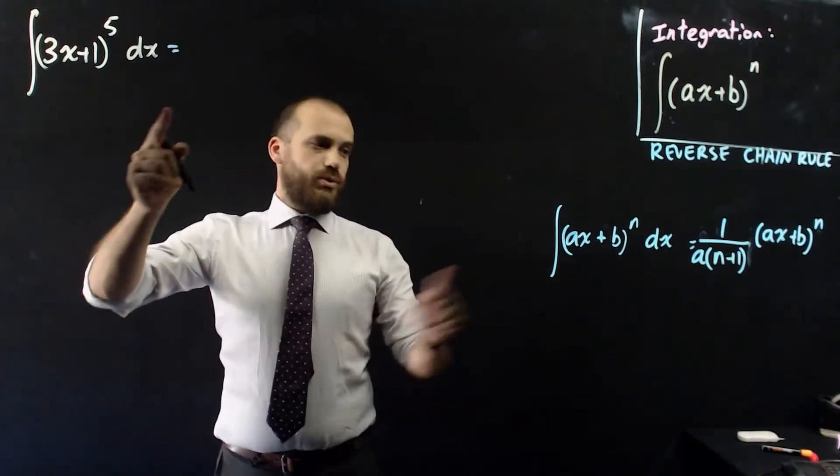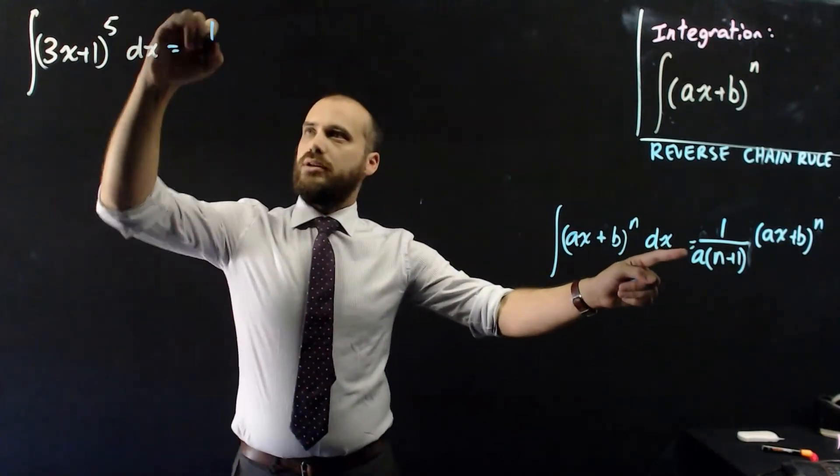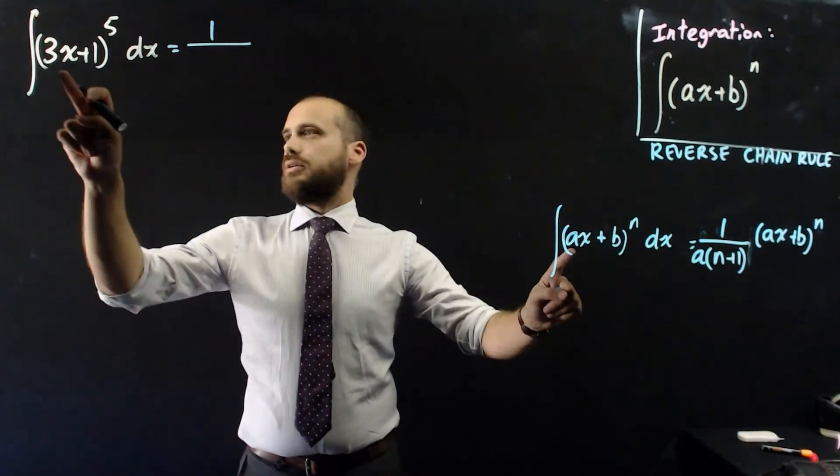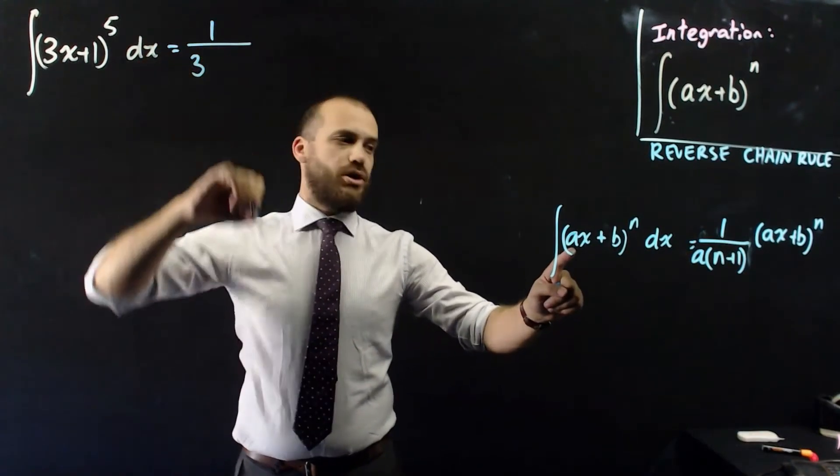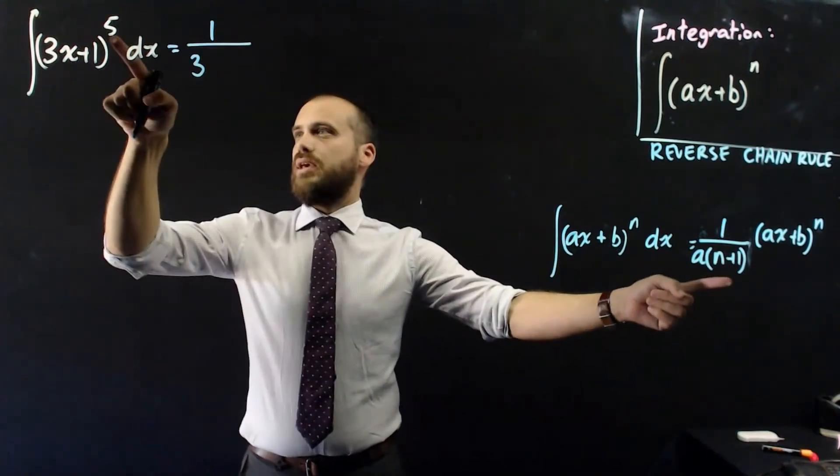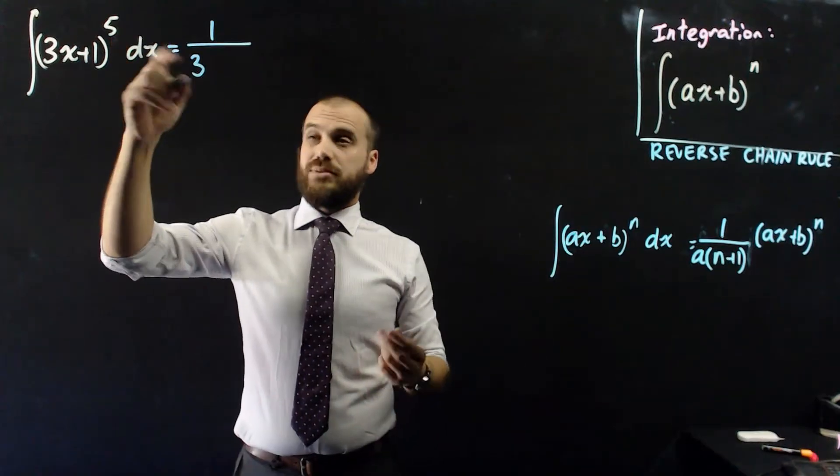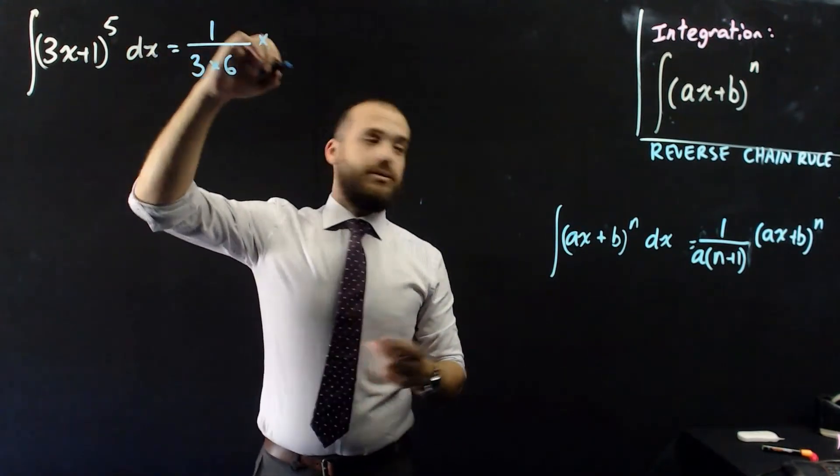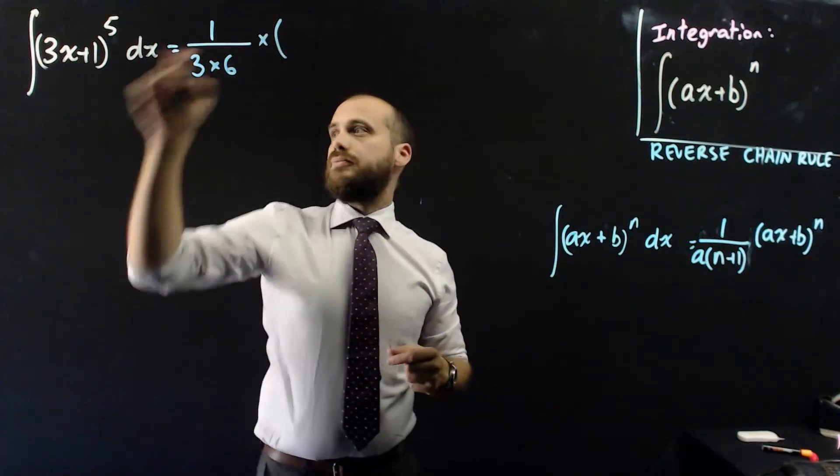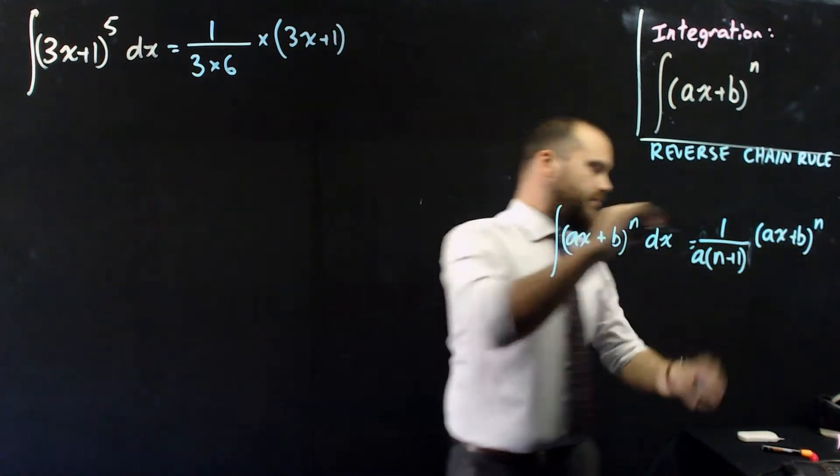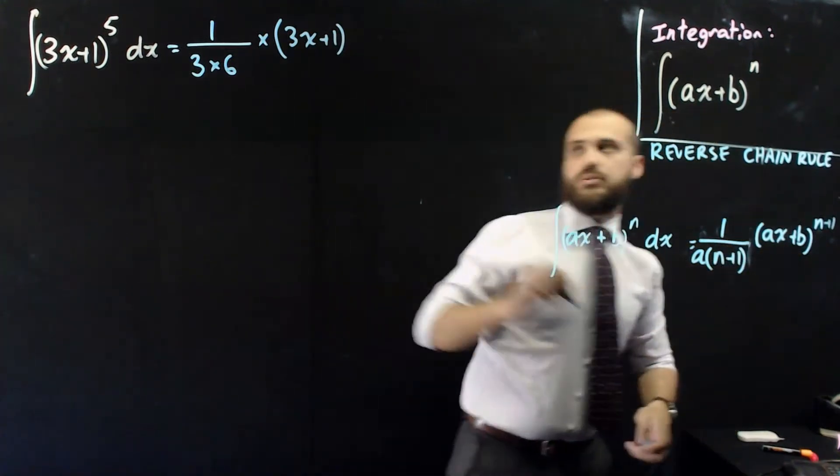All right, this is going to be equal to 1 over a, a times n plus 1, n plus 1, so times 6. And then we multiply that by ax plus b, 3x plus 1, to the power of n plus 1.